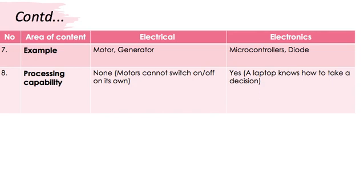Unfortunately, electrical devices cannot process any information. Be it a motor, a generator, or an LED — they cannot switch on and off on their own; physically someone has to switch them. Whereas electronic devices know how to operate and do have processing capabilities. For example, if we are using a mobile or a computer, we enter a command and the computer automatically programs itself and knows what the output should be. So in that way also, electronics and electrical are different.